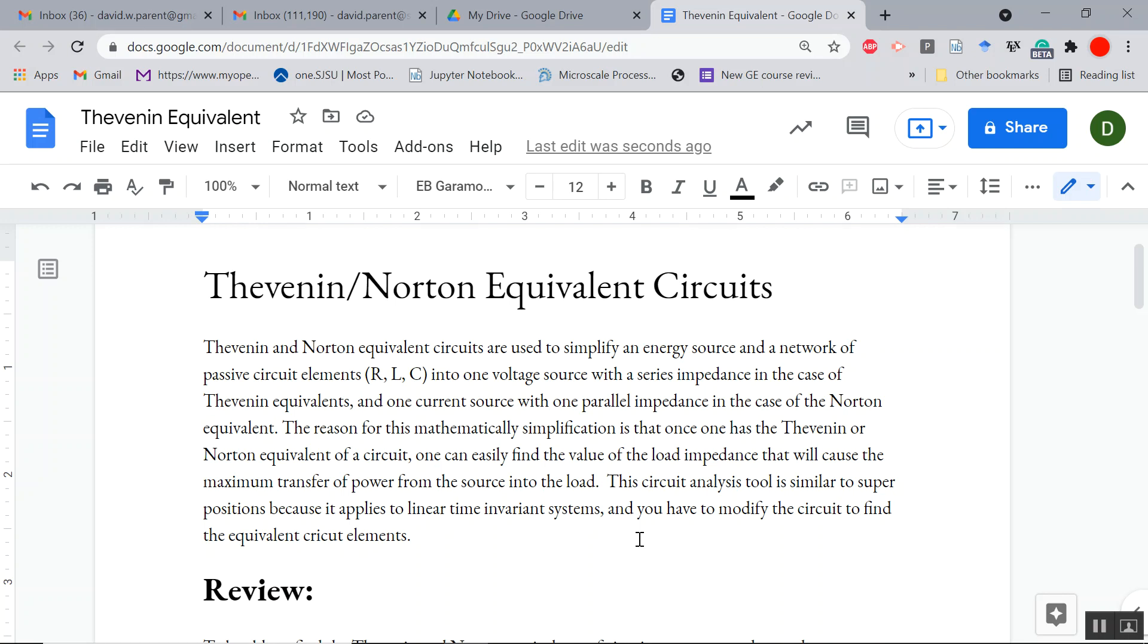This is just a quick video on Thevenin and equivalent circuits because I had a meeting I could not postpone and so we missed class. But the big idea of Thevenin and Norton's is that we take voltage sources and current sources and a network of resistors, capacitors, and inductors and we can turn that into one voltage source with a series resistance in the case of a Thevenin or one current source in parallel with a resistance or impedance in the case of the Norton equivalent circuit.